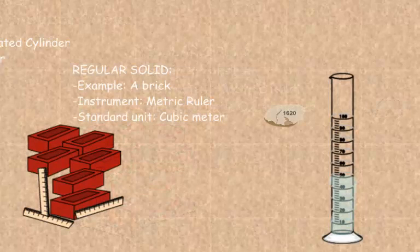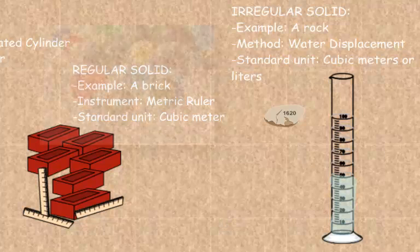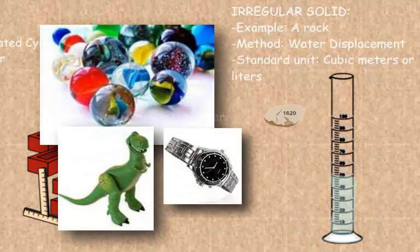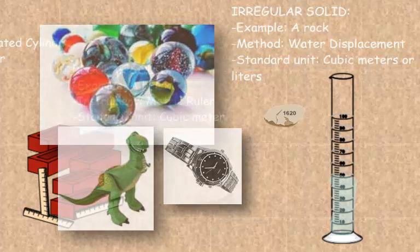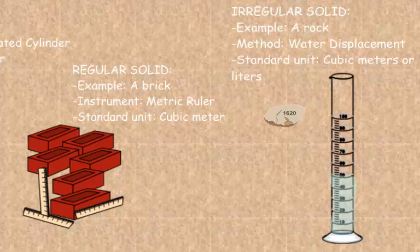The last category of measurement for volume would be trying to measure an irregularly shaped object. So we're talking marbles, a dinosaur or a watch. Stuff that you can't measure length, width, and height. So you need to use a different technique in order to measure the volume of these items. And you're going to use something like a graduated cylinder in our lab. If it's something bigger, you would use maybe a bathtub or a pool. Something that has measurement on it. But in our lab, we're going to be using a graduated cylinder.